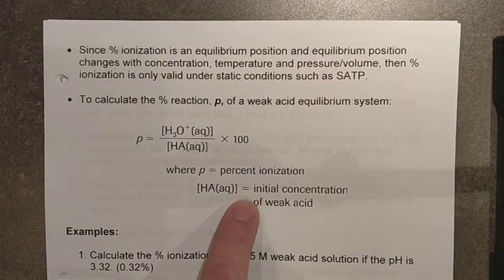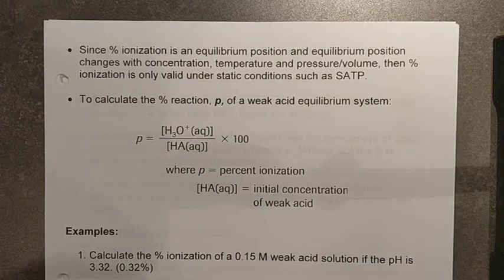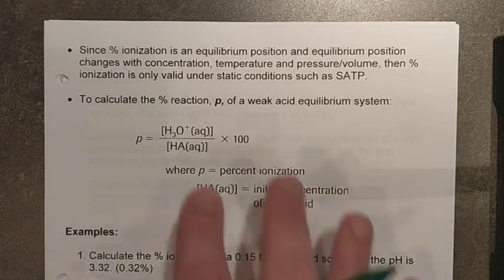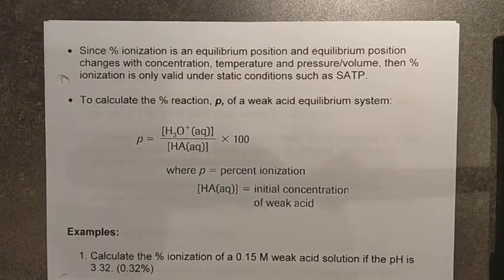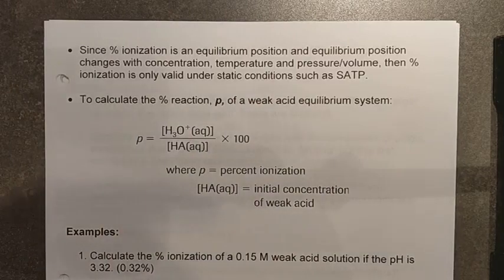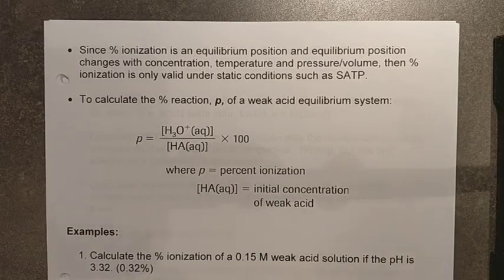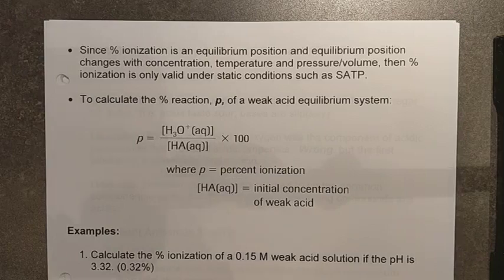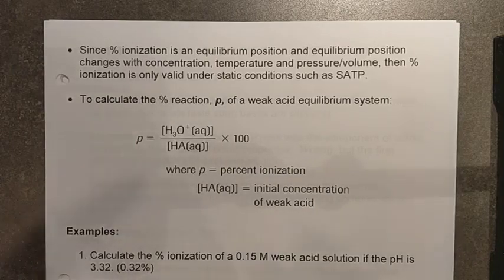Percent ionization is really just a percentage yield calculation. We would use this to figure out how far a weak acid goes through equilibrium to produce hydronium ions. If we'd had more time for the unit, we would tie it into helping us use K values for our ICE tables to confirm whether or not a K value is valid. We're going to ignore this as well, since percent ionization is essentially the same thing as percent reaction — we're just using the terminology for an acid reacting with water.